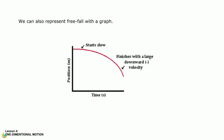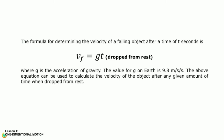Finally, the negative slope of the line indicates a negative, i.e., downward, velocity. The formula for determining the velocity of a falling object after a time of t seconds is: V sub f equals g times t, for an object dropped from rest, where g is the acceleration of gravity. The value for g on earth is 9.8 meters per second per second. This equation can be used to calculate the velocity of the object after any given amount of time when dropped from rest.